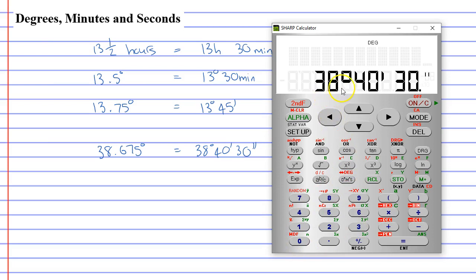So we've written it in degrees, minutes, and seconds. Then I'm going to press equals. And I believe if I go second function, DMS, it will give us the solution we want. Remembering that different calculators have different ways of converting between decimals and degrees, minutes, and seconds.